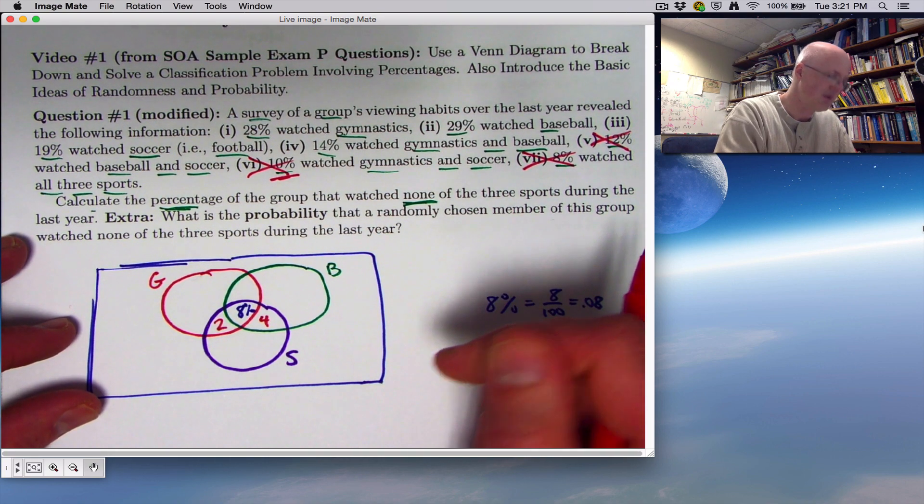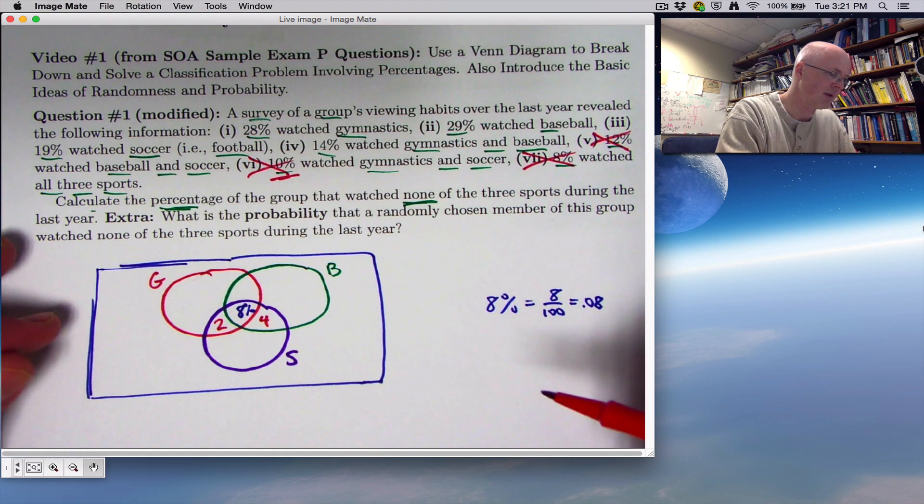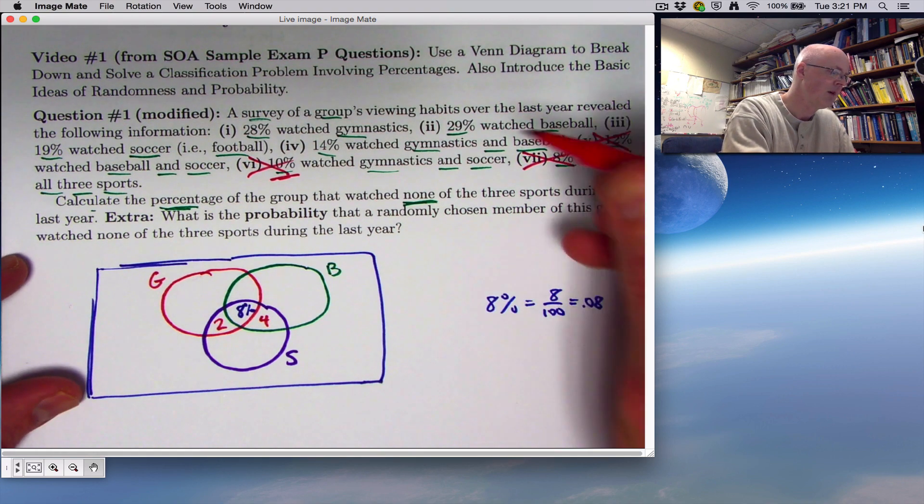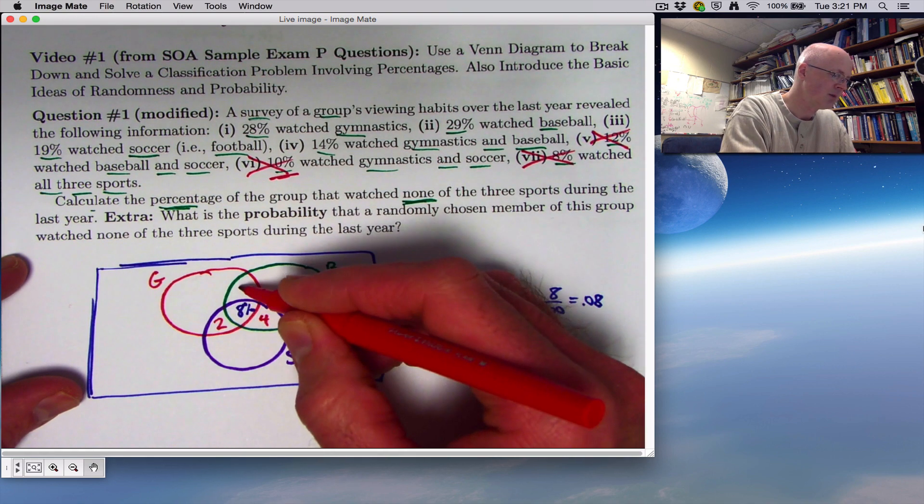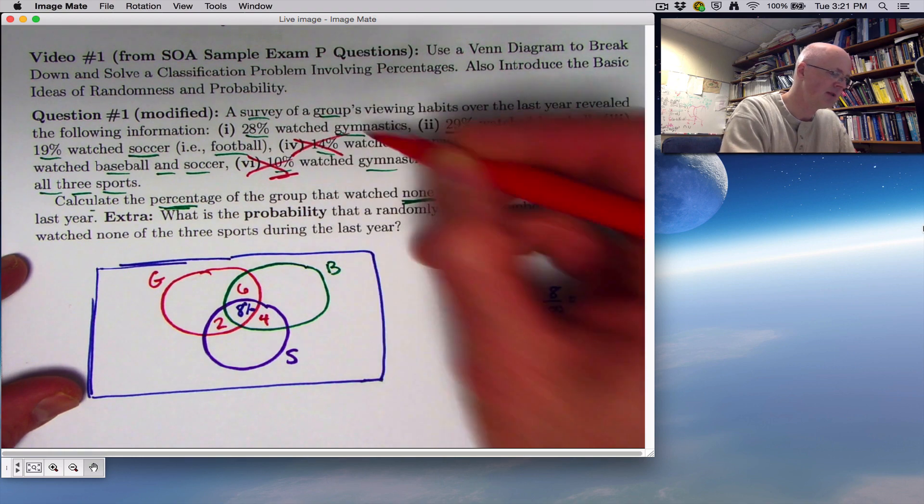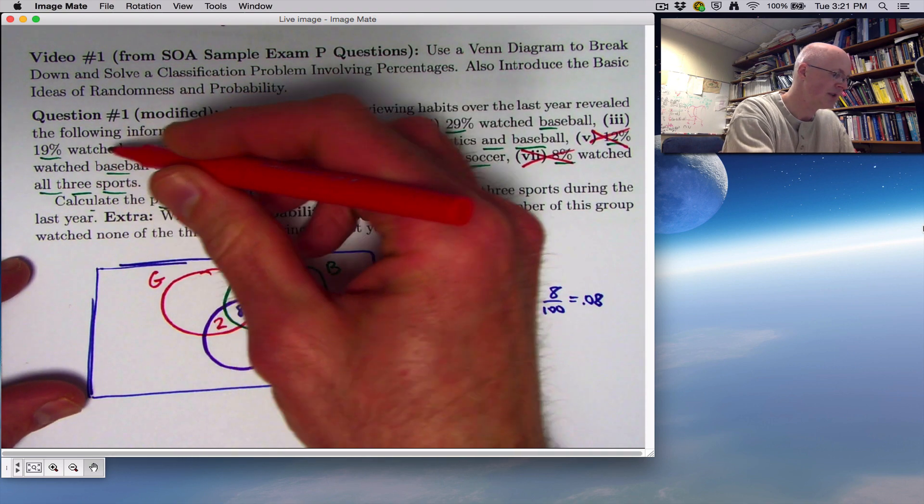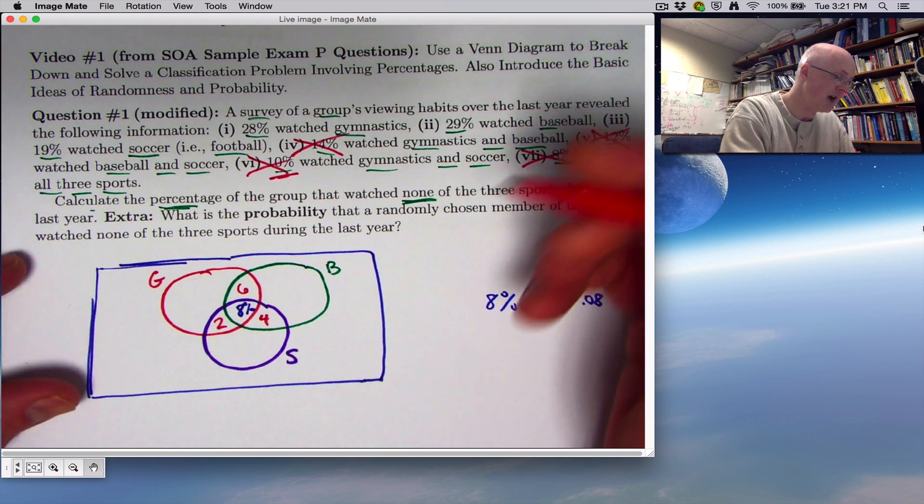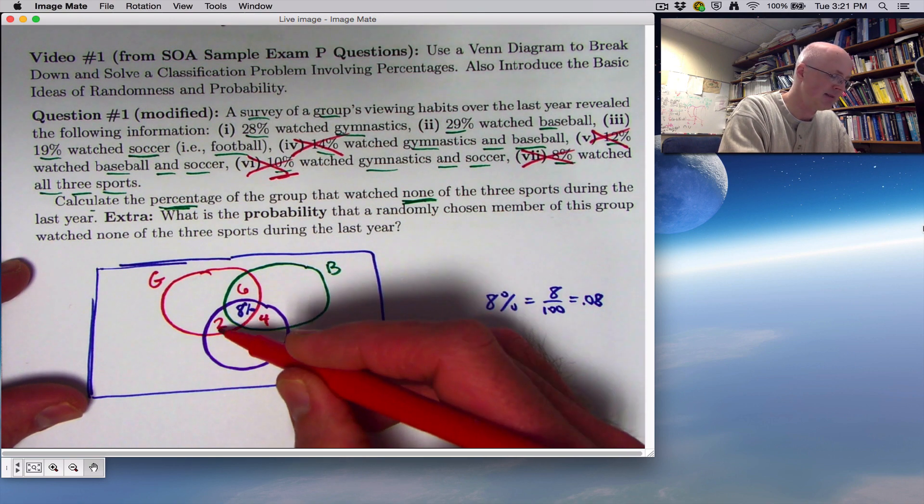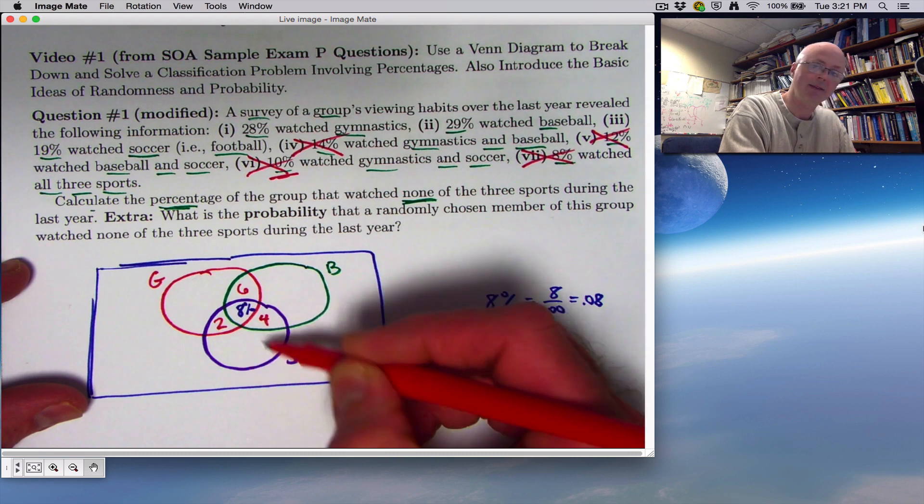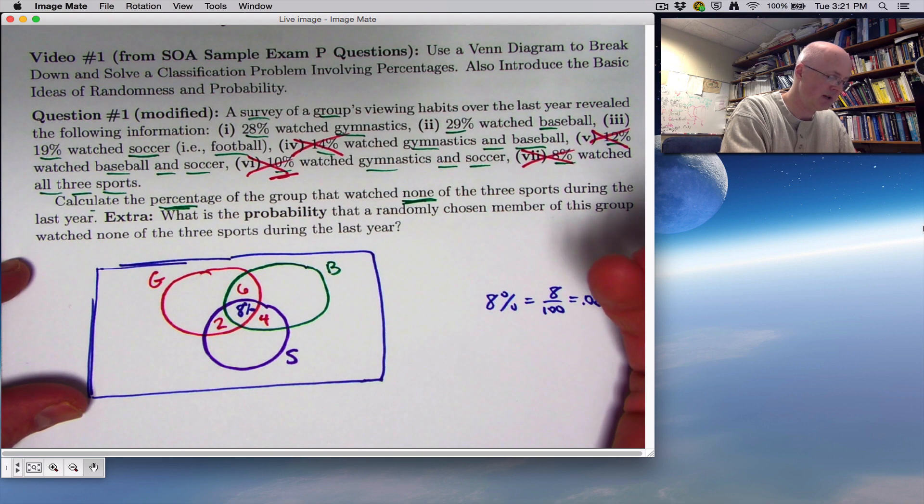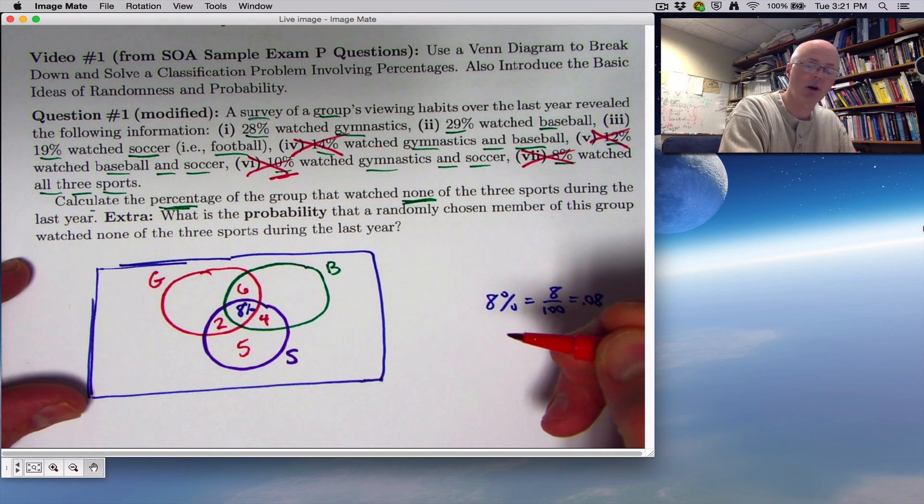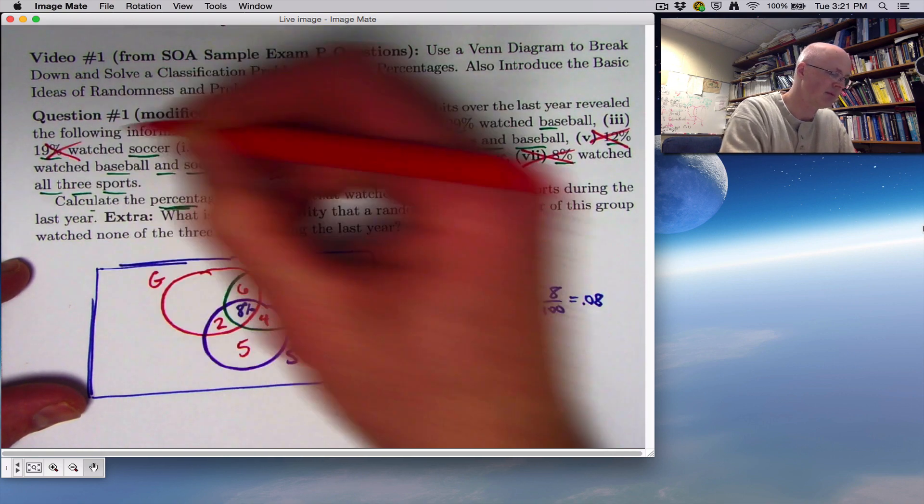Of course, you could literally imagine these being 100 people. And so you'd have 8 people standing in here, 2 people standing in here, and 4 people standing in here if that's helpful. Just continue working backwards. 14% watched gymnastics and baseball. You've already accounted for 8 of those. So put 6 here. 8 plus 6 is 14. 19% total watched soccer. They are in the purple circle. We've already accounted for people in these three regions. So we need to put a number in this region here so that all four numbers add up to 19.